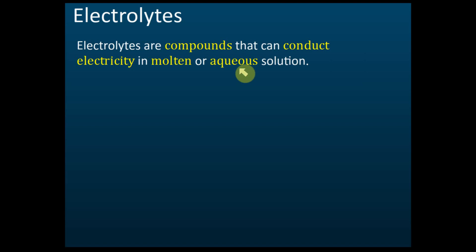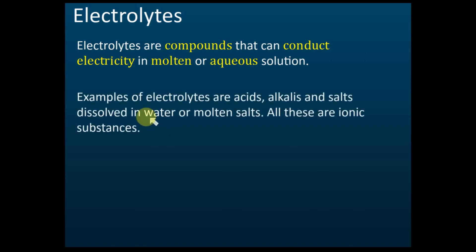Electrolytes can conduct electricity in molten or aqueous solutions. Examples of electrolytes are acids, alkalis, and salts that dissolve in water, or molten salts — all these are ionic substances. To know whether a substance is an electrolyte or not, first check whether it is an ionic compound. If it is an ionic compound, then it is definitely an electrolyte.